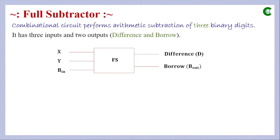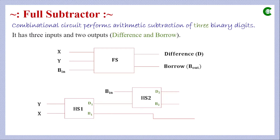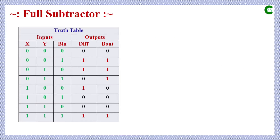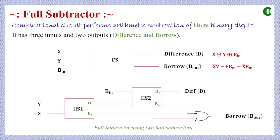A full subtractor can be implemented using two half subtractors, but the scope of this class is implementing it using the minimum number of NOR gates. This is the truth table for a full subtractor, and if we simplify the columns of difference and borrow-out using a K-map, we get the corresponding expressions.